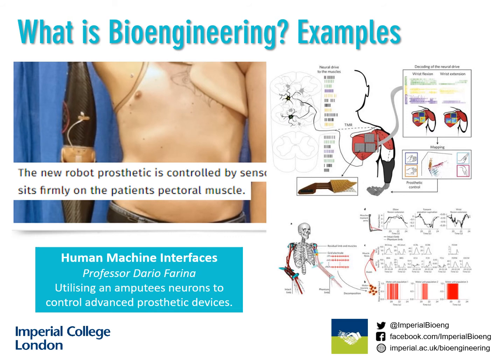Professor Dario Farina and his group work predominantly in the area of neurotechnology and robotics, using the neural networks in the body to control advanced prosthetics such as a robotic arm. The aim of this work is to allow the user to control the arm with their brain as a reflex action, as opposed to conventional prosthetics which require the user to actively twitch or flex muscles to activate the system.